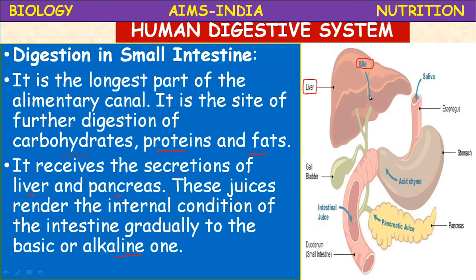The bile juice is produced by hepatic (liver) cells and passes into the gall bladder, a sac-like structure that concentrates the bile by absorbing excess water. From the gall bladder, bile enters the duodenum via the cystic duct. The bile duct carries bile from the liver to the gall bladder, and from the gall bladder a common duct opens into the duodenum, the first part of the small intestine.